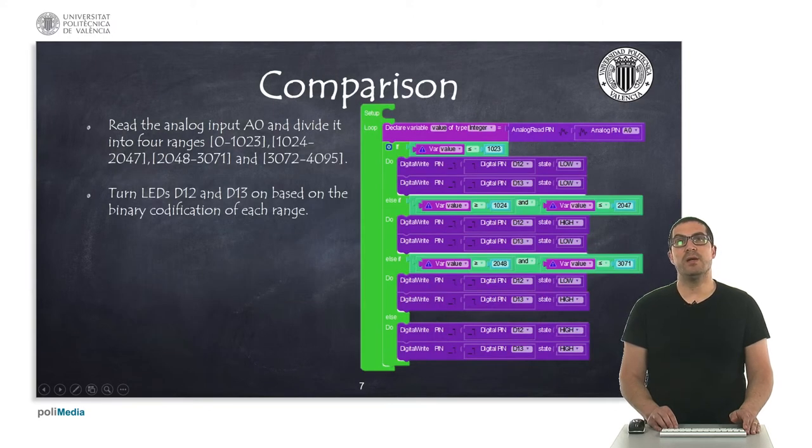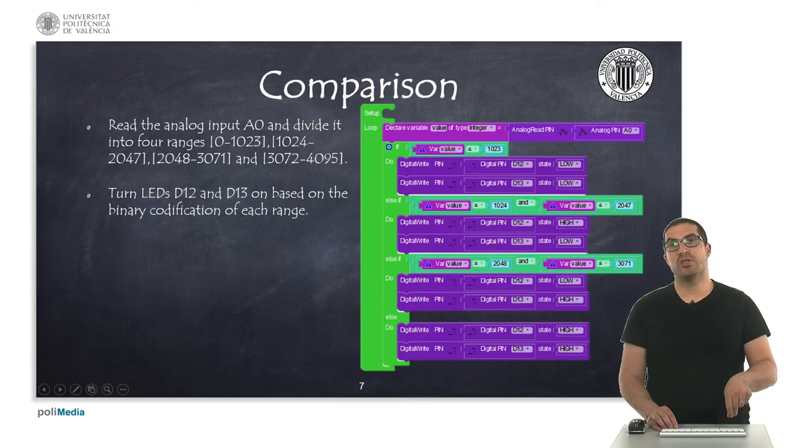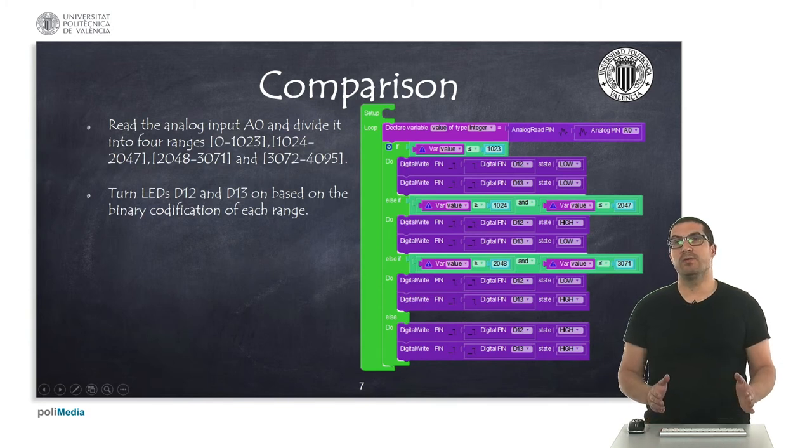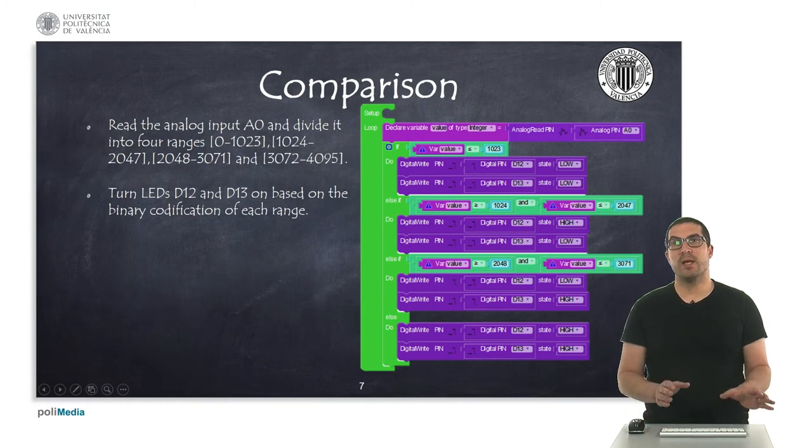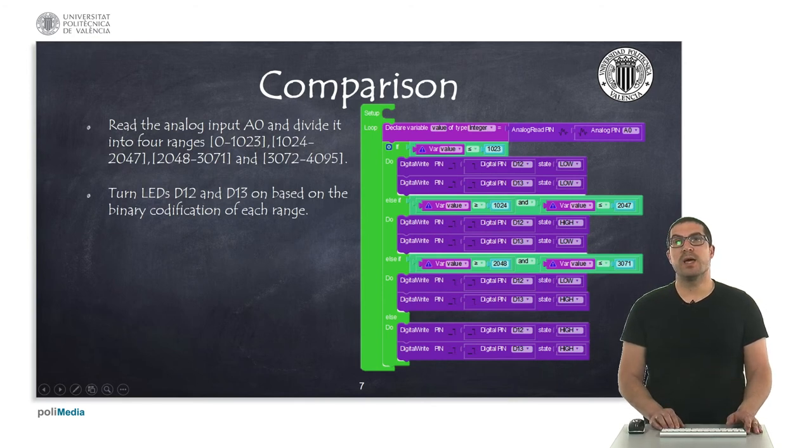And then finally here, what I'm doing is I'm reading the potentiometer value which is connected to pin A0 and this value could be depending on the range or the position of the potentiometer could be a number between zero and 4095. Here what I'm doing is I'm dividing this into four ranges. If it's below, let's say, 1023, then I switch off the two LEDs.